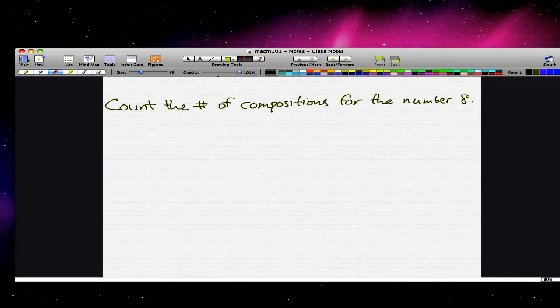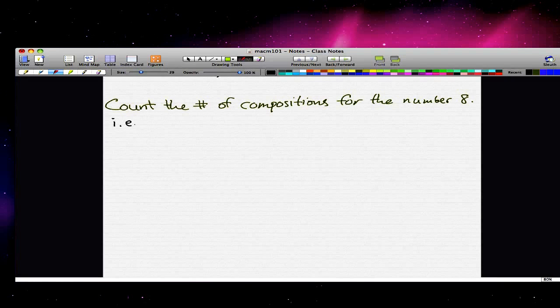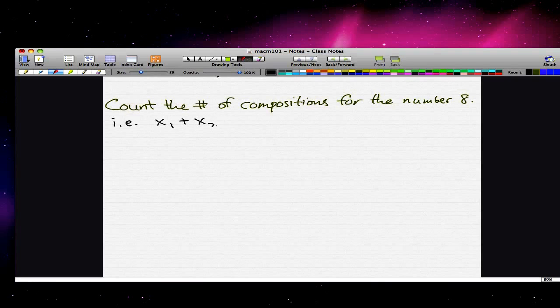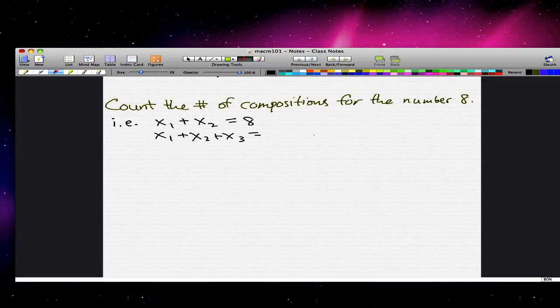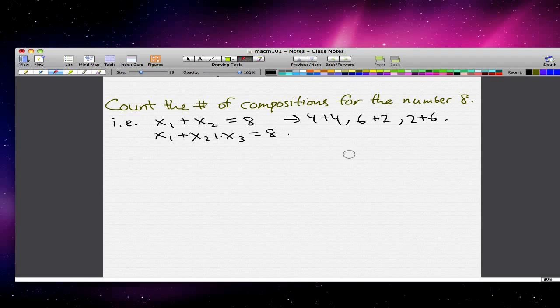The second example is count the number of compositions for the number 8. So by compositions, what I mean is, for example, one composition is, by composition what we mean is like x1 plus x2 equals 8, and x1 plus x2 plus x3. These are two different general compositions. And, let's say, 4 plus 4 would be one composition. 6 plus 2 would be another composition. 2 plus 6 would be a composition. So there are a lot of different ways that we can get to number 8. But you don't want to go ahead and list out all these different compositions by hand because that would take an eternity. So what we're going to do is we're going to try to find a more simpler way to get these compositions.